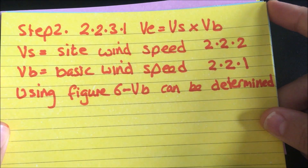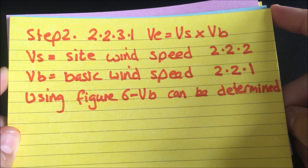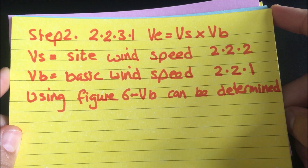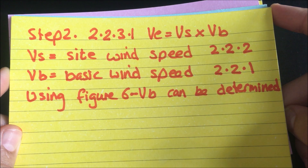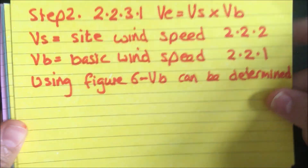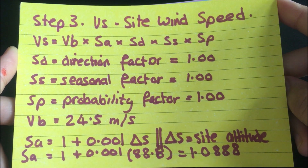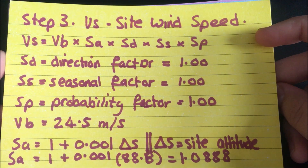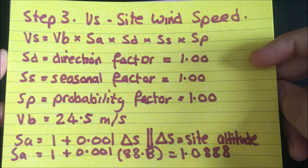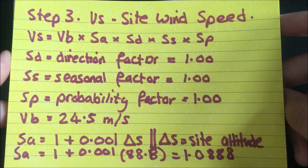Step two states that VE equals VS times SB. VS is the site wind speed and VB is the basic wind speed. VS can be determined by looking at section 2.2.2 and VB from section 2.2.1. When you go to 2.2.2 for VS, it gives you this formula: VS equals VB times SA times SD times SS times SP.